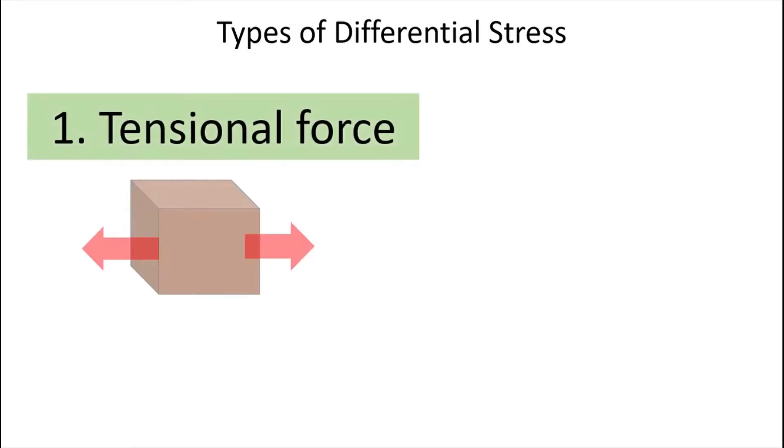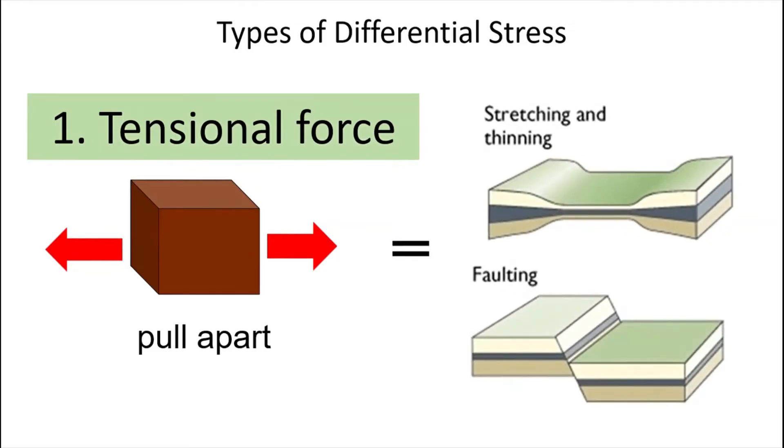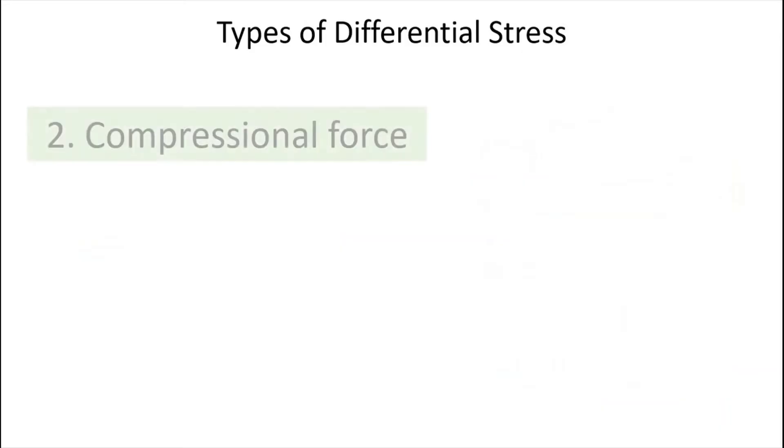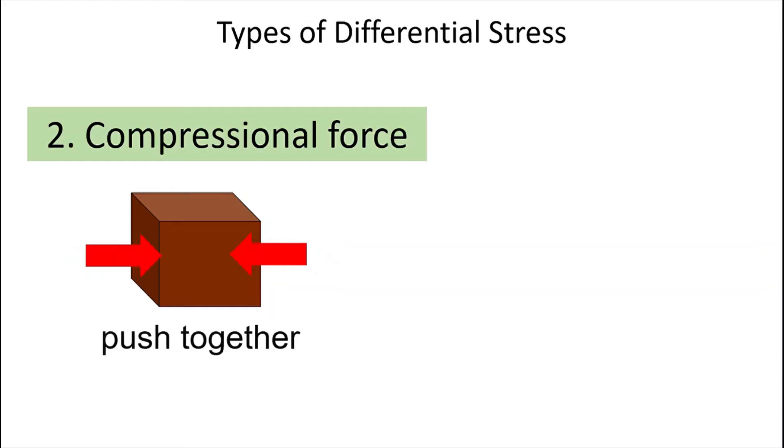The first type of differential stress is tensional force, which is a stress that pulls objects apart, giving them a larger surface area. This is also called stretching force. The next type is compressional force, also called contracting force. This is when objects are pushed together, which results in decreased surface area or volume.